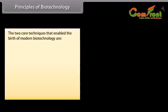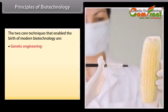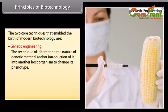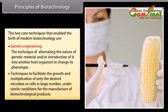The two core techniques that enable the birth of modern biotechnology are genetic engineering — the technique of altering the nature of genetic material and/or introduction of it into another host organism to change its phenotype — and techniques to facilitate the growth and multiplication of only the desired microbes or cells in large numbers under sterile conditions for the manufacture of biotechnological products.